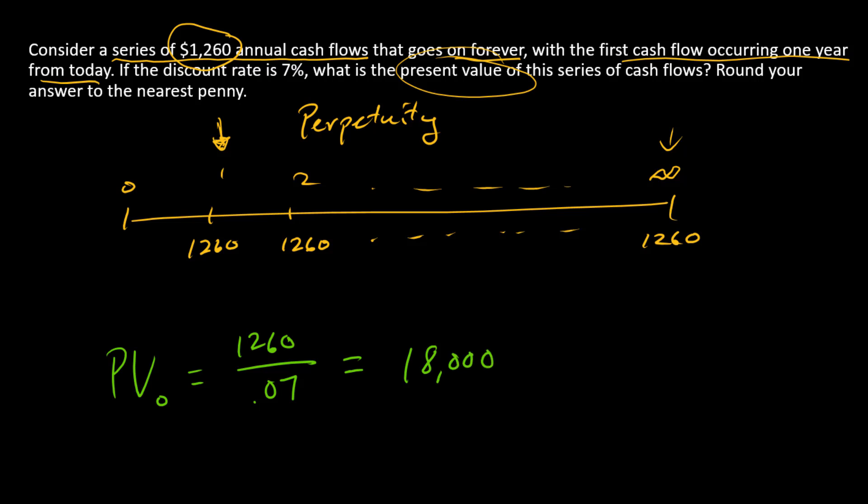And so that's the answer. How do we think about this? We think of $18,000 today and this series of equal payments starting next year all the way into infinity as equivalently valuable, and so we would swap one for the other.